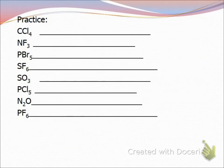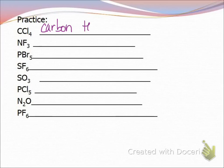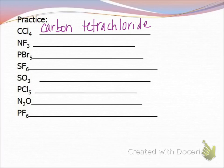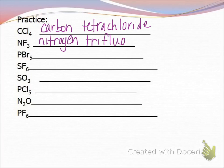Let's practice writing some names from formulas. We have CCl4 — the first thing is carbon, so we write carbon. We have four chlorides, and four means tetra, so we say tetrachloride, changing the ending to IDE. The next one is NF3 — we just write nitrogen, and then we have three fluorides, so we say trifluoride. Spelling is going to be important on those naming quizzes — make sure you get used to spelling fluoride; everybody tries to do OU and it's UO.